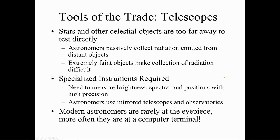Stars and other celestial bodies are too far away to test directly. Astronomers passively collect electromagnetic radiation emitted from distant objects. Extremely faint objects make collection of radiation difficult. So we have specialized instruments. We need to measure the brightness, spectra, and positions with high precision. For this, we use mostly mirrored telescopes and observatories.